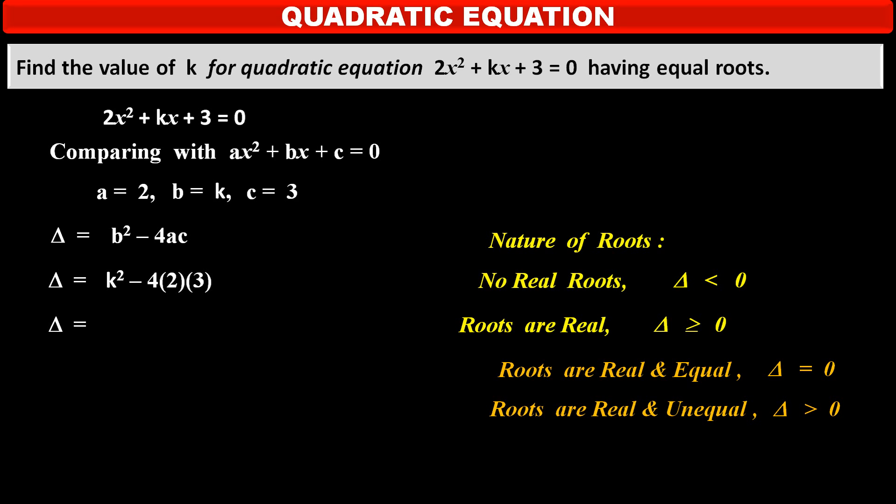Therefore, solving we get: discriminant delta is equal to k² minus 4 × 2 × 3, which gives k² minus 24.